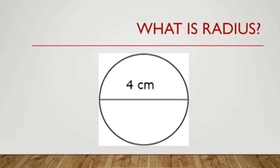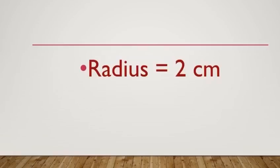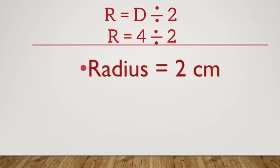Now, the another example is, if the diameter is 4 cm, what is the radius? Very good. It is 2 cm as radius is half of diameter.